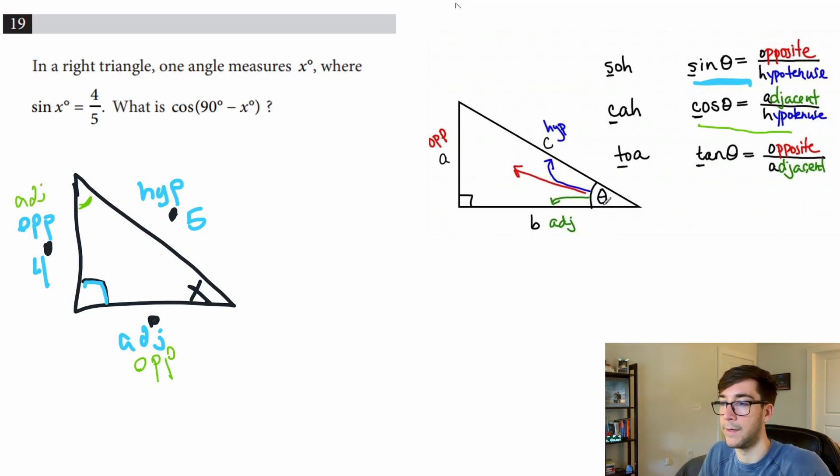So what is cos(90° - x)? We're looking at adjacent over hypotenuse. Adjacent is 4, hypotenuse is 5, so the answer is simply 4/5.